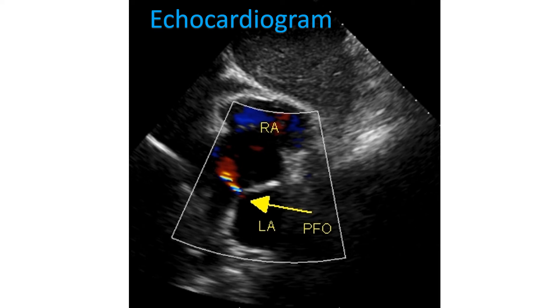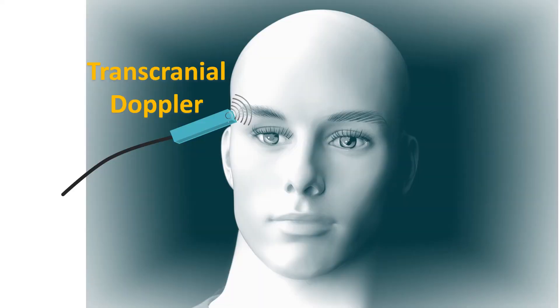The color Doppler echocardiogram shown here shows a left-to-right shunt across the PFO, most likely due to higher pressure in the left atrium as discussed earlier. Another test is transcranial Doppler, an ultrasound study of the head which looks for tiny air bubbles in the cerebral arteries.